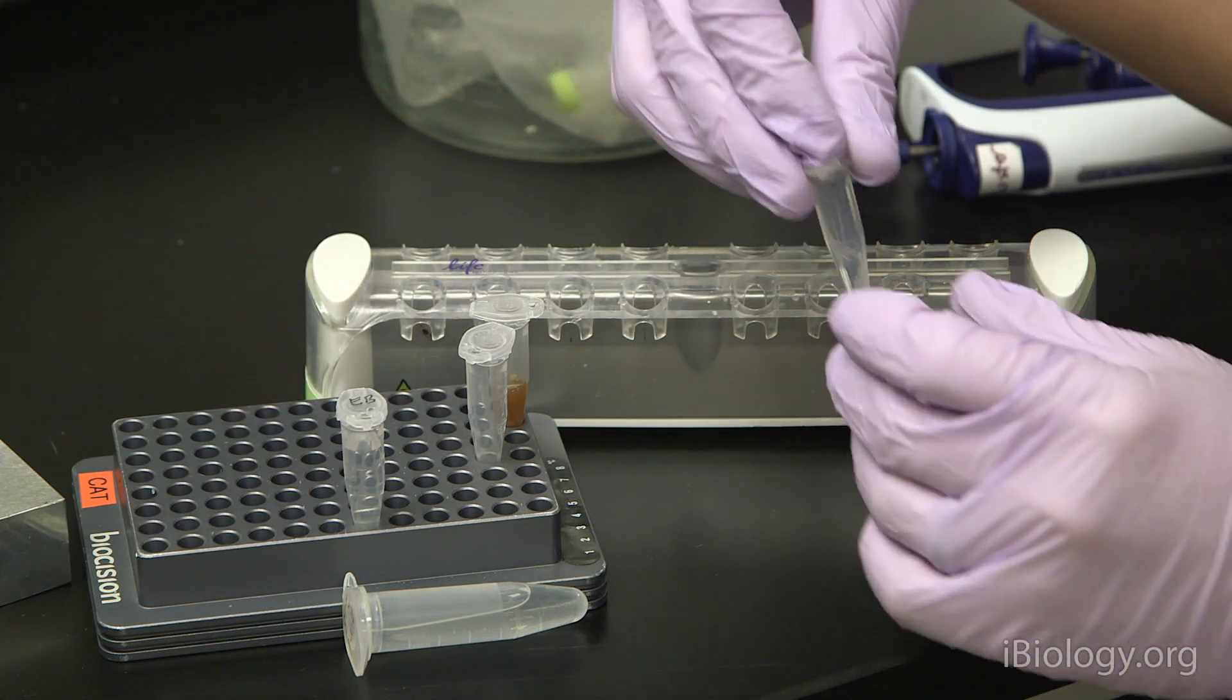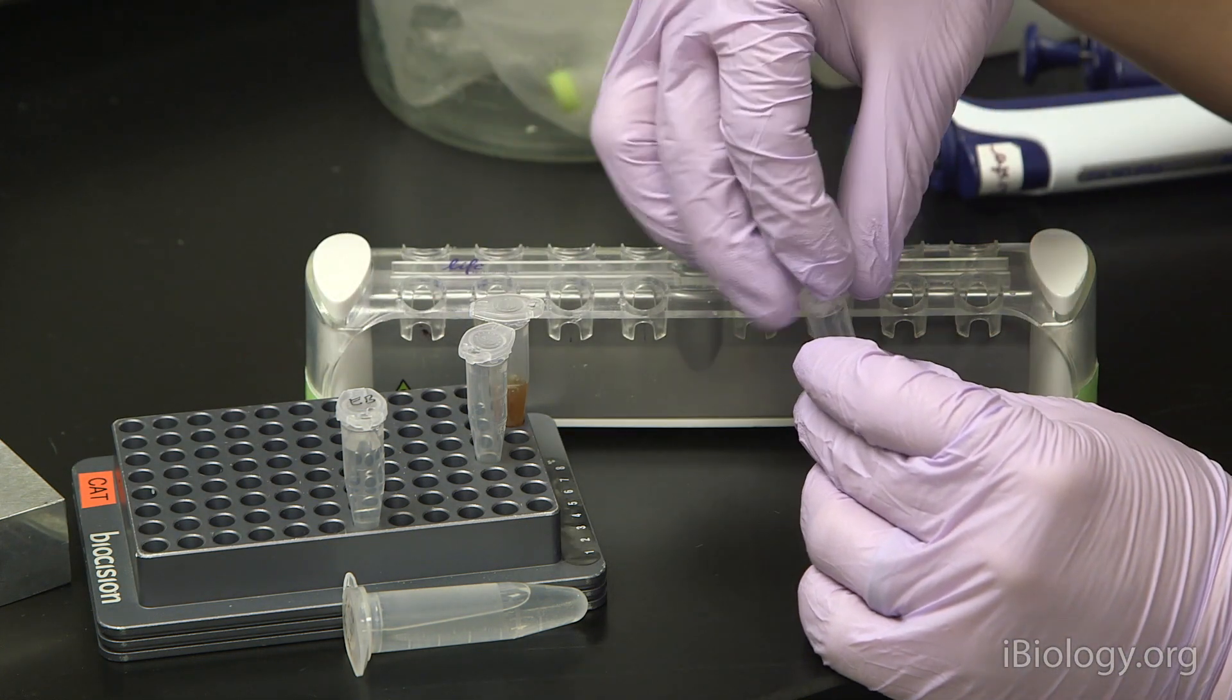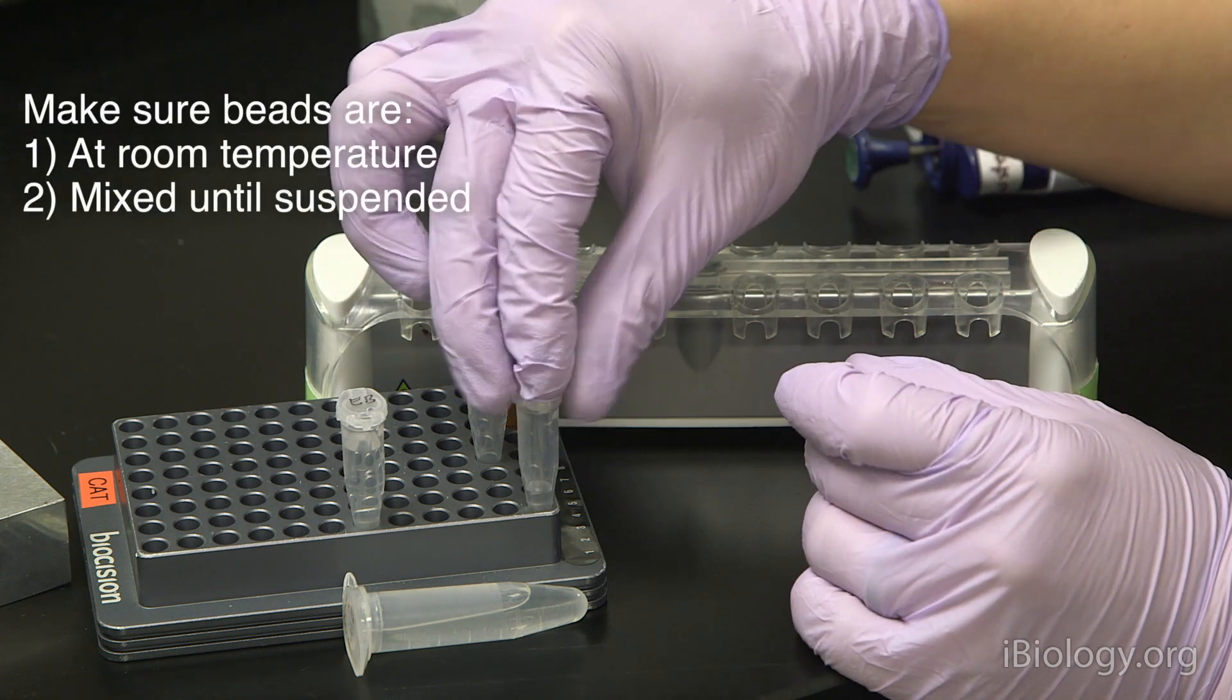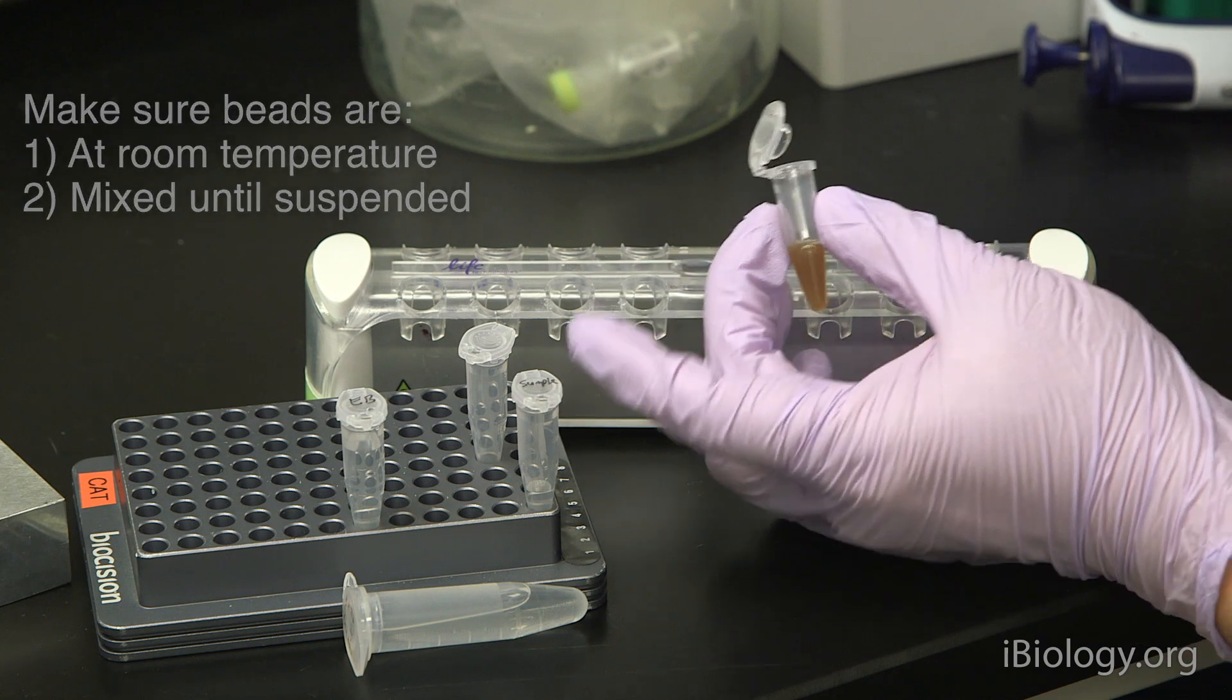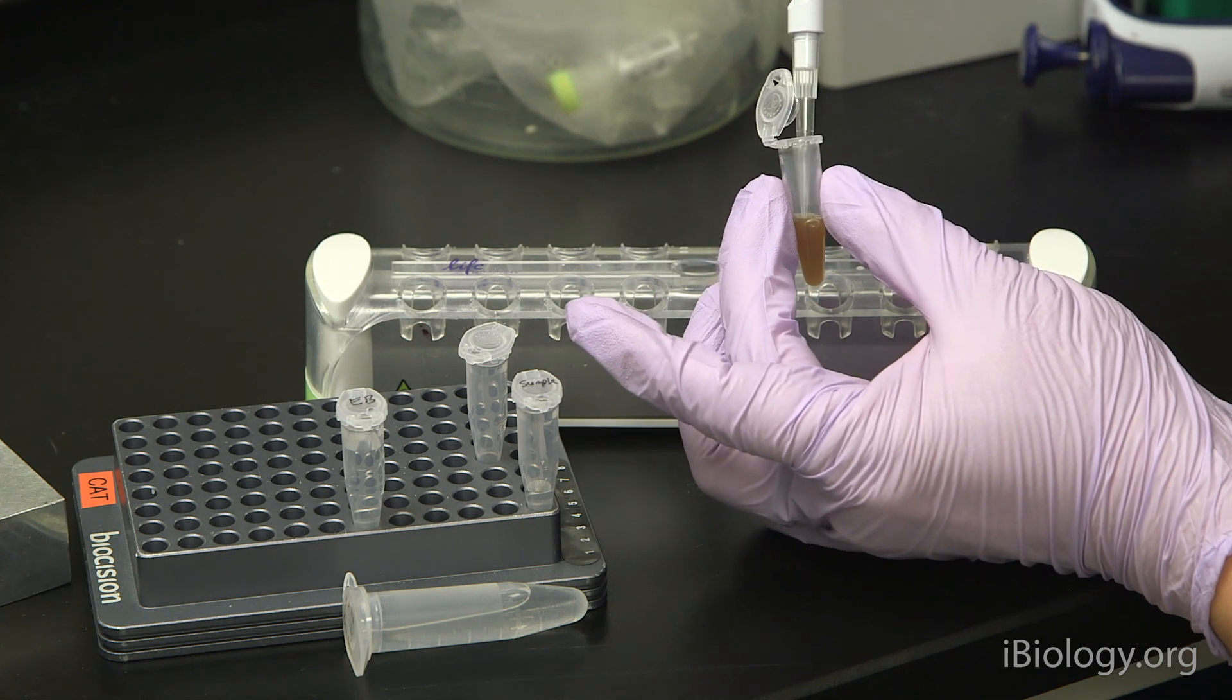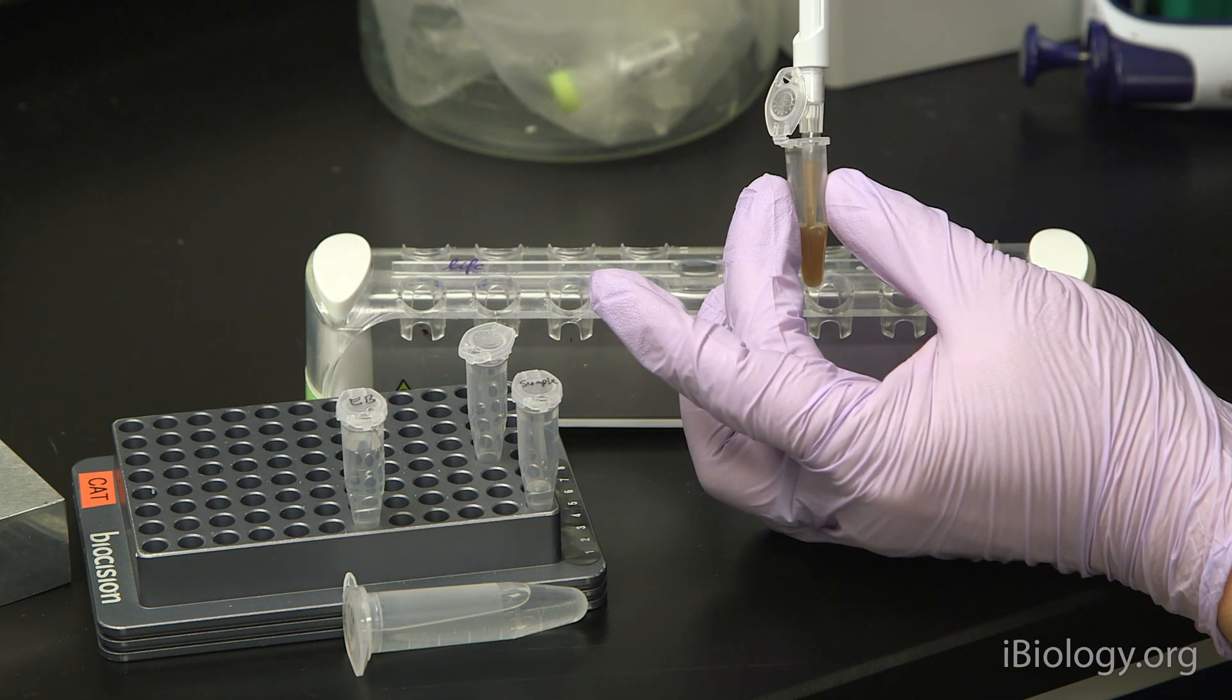The first step is to take your sample and add some of the spry beads to the sample. When pipetting the spry beads, you want to pipet slowly because the solution is very viscous due to the high PEG concentration.